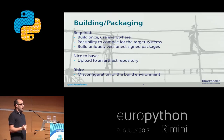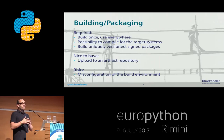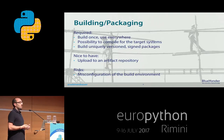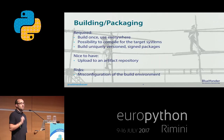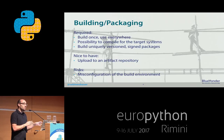A very good best practice is to build this artifact just once and then use it everywhere. There should be a possibility to compile for our target system, which means mostly the production system. We need either a really similar build environment or we have to find some ways to do cross-compiling. And another thing: if we have an artifact with a version, it should be unique — there should never be two tar files with the same version but different contents. This should never happen.